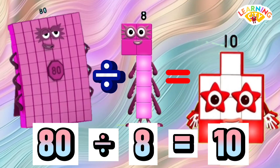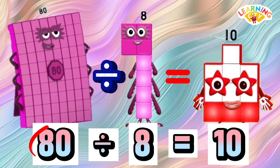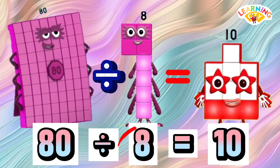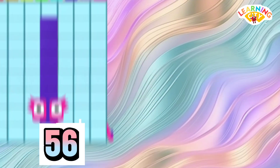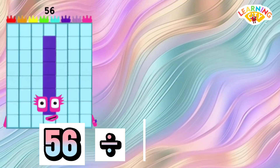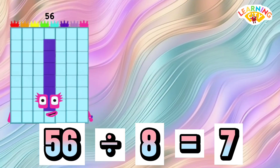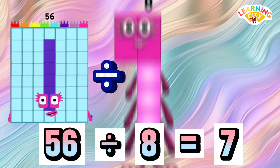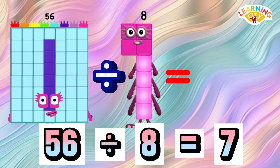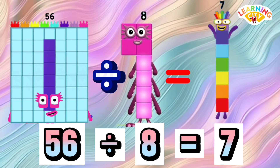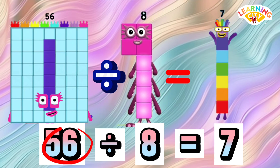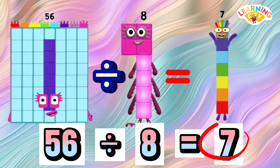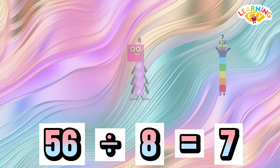80 divided by 8 equals 10. Let's repeat: 80, 8, 10. 56 divided by 8 is equals to 7. Let's repeat: 56, 8, 7.